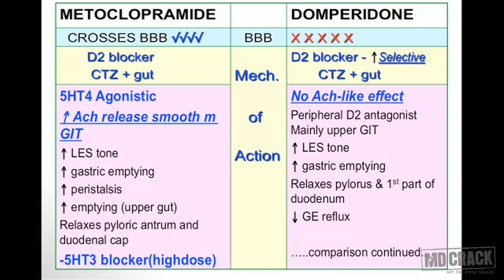Now a comparison of metoclopramide and domperidone. Metoclopramide crosses the blood-brain barrier; domperidone does not cross the blood-brain barrier. Regarding mechanism of action: metoclopramide is a D2 blocker acting on the chemoreceptor trigger zone plus the gut. Domperidone is also a D2 blocker but more selective, also acting on the chemoreceptor trigger zone and the gut. Both drugs act on the CTZ — but one crosses the blood-brain barrier and the other doesn't.